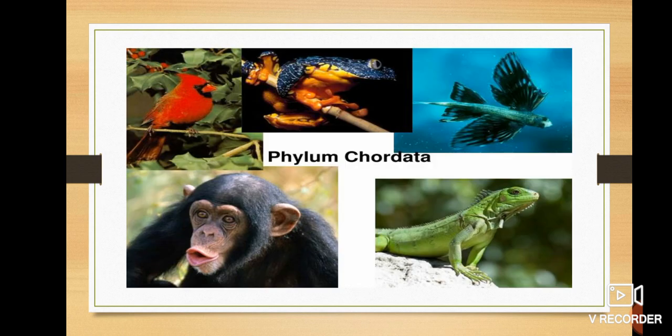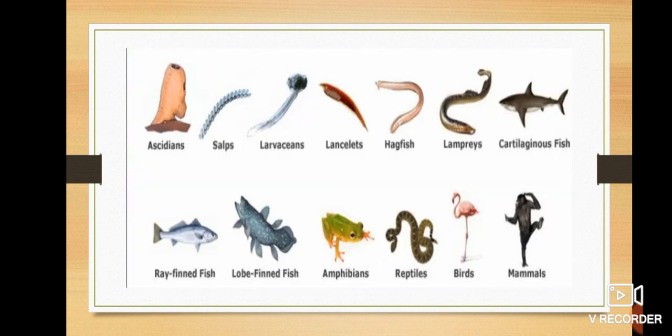If we talk about the animals that come under Phylum Chordata, there are reptiles, amphibians, aves, mammals — five tetrapod classes. You can see the diagram here, showing ascidians, salps, larvae, lancelets, hagfish, lamprey, amphibians, reptiles, birds, and mammals. We will clarify this classification in the next class.